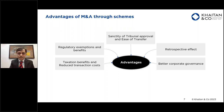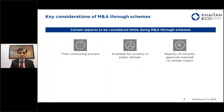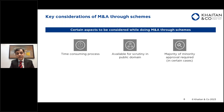The next question: if there are advantages of doing M&A through a scheme, why would all transactions not be done under a scheme? The first consideration is the various approvals required. Other than the tribunal approval, you will also require approval from shareholders and creditors of the entities involved, from the Regional Director or Registrar of Companies, and from sectoral regulators depending on the business sector. Depending on whether listed or unlisted entities are involved, a scheme could take anywhere between 6 to 12 months.